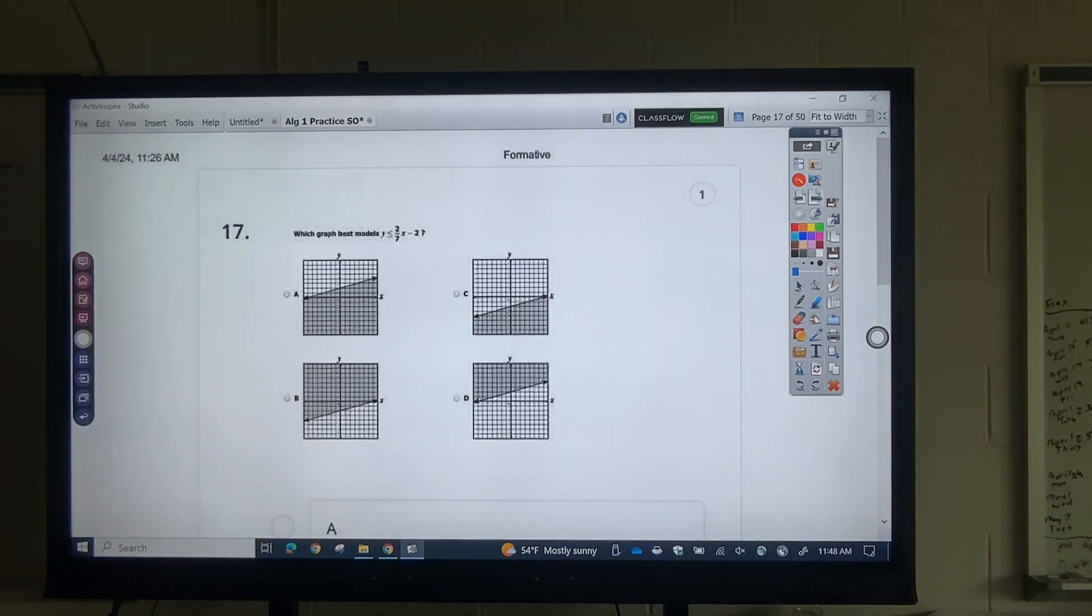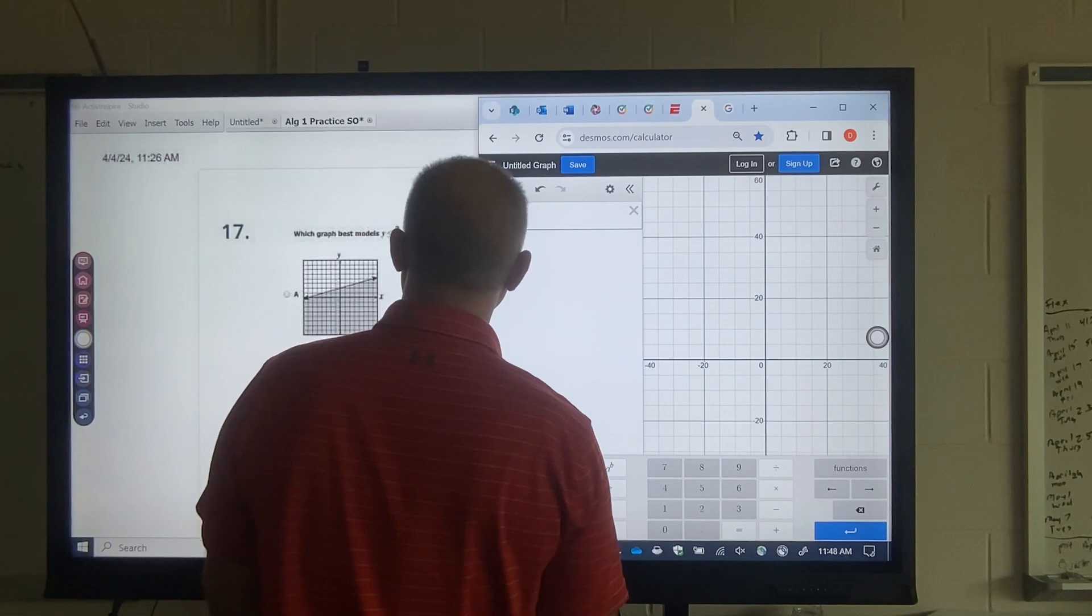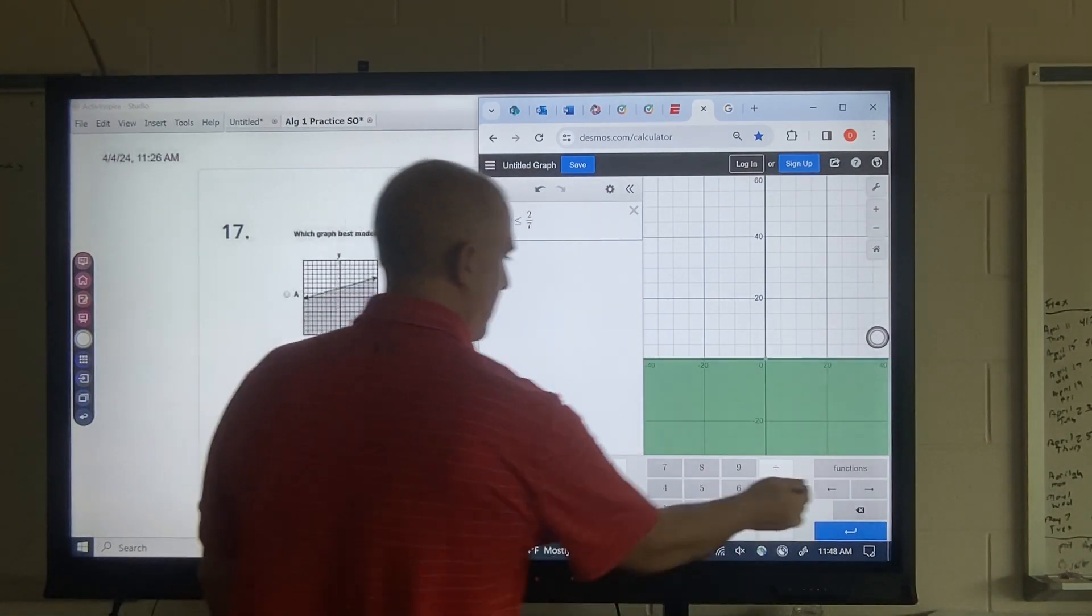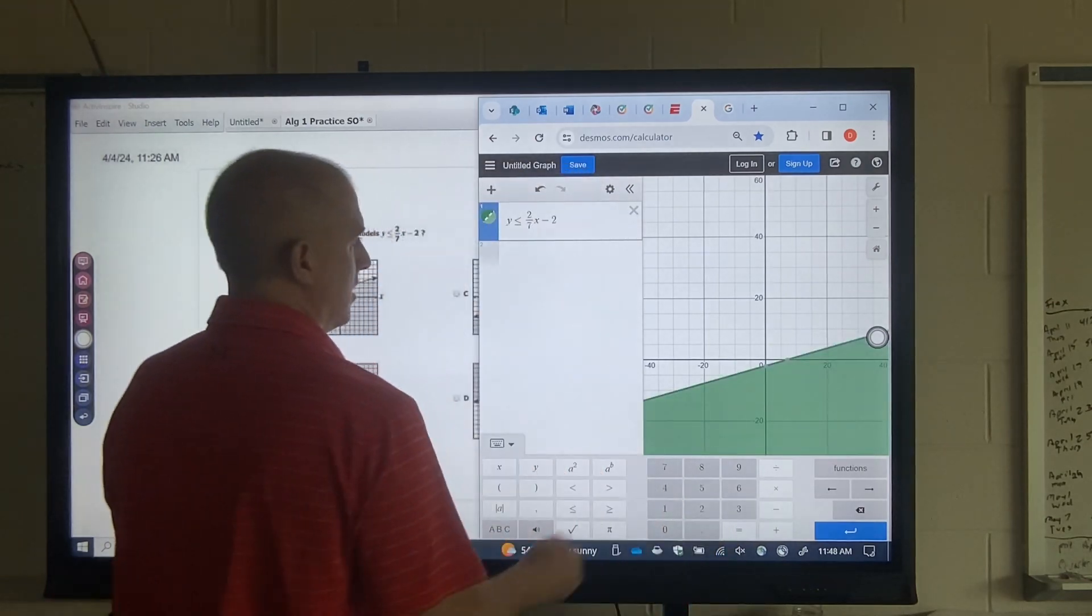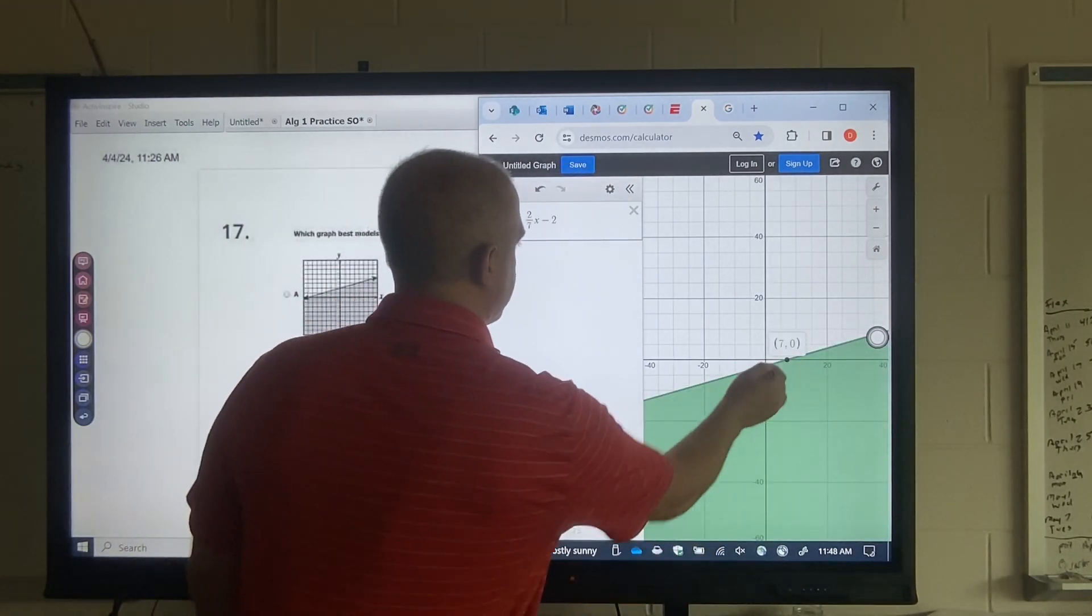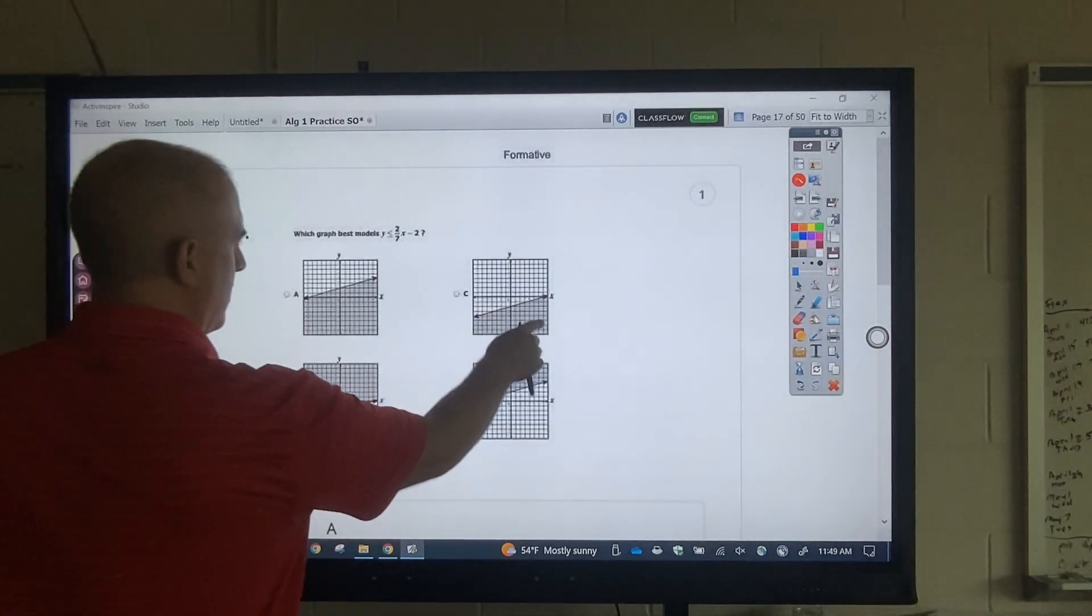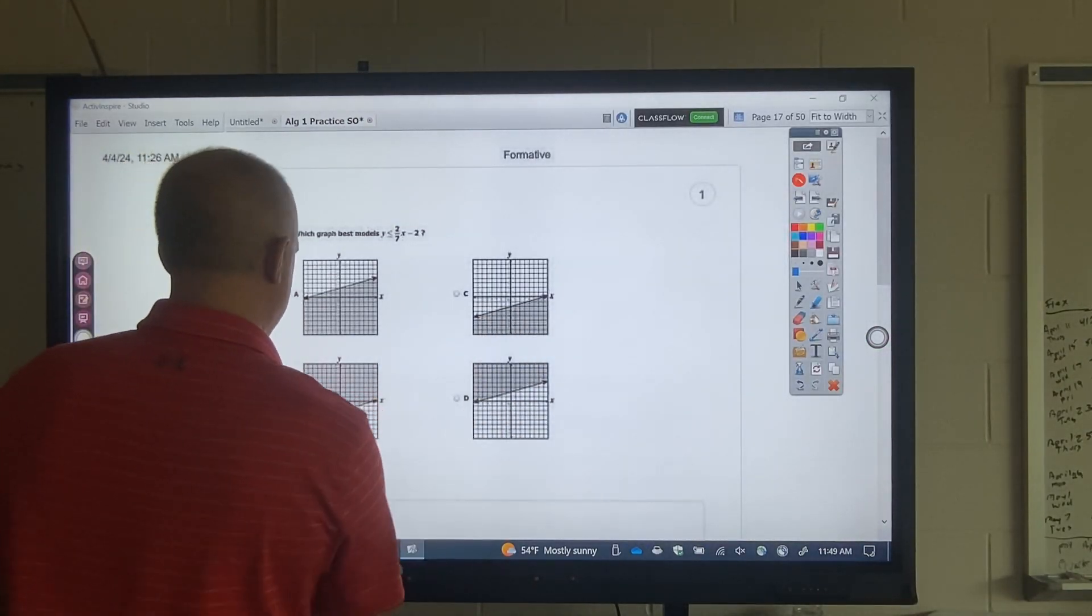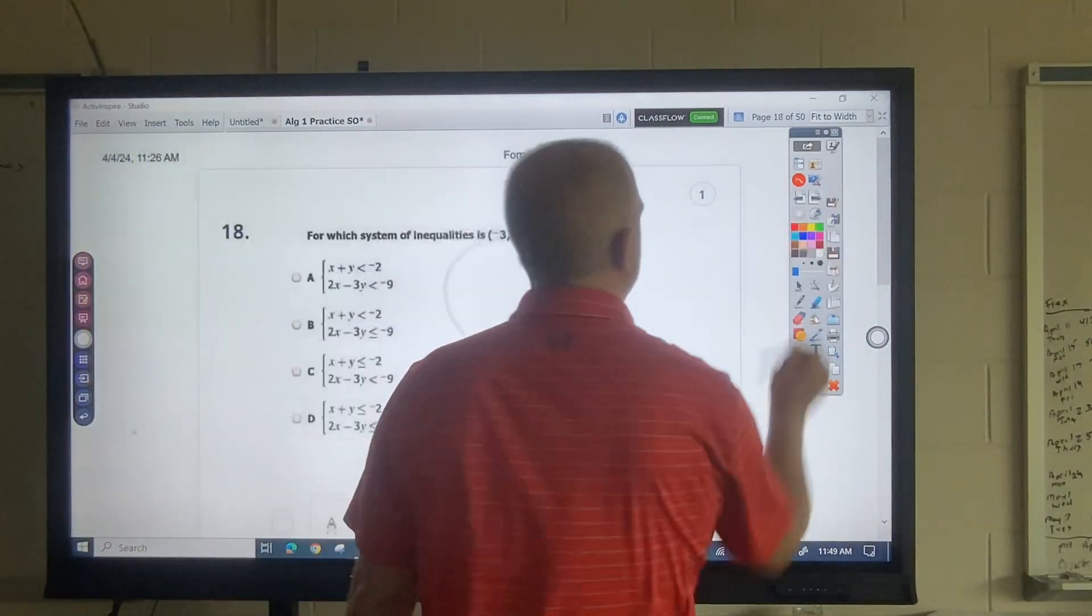This is another graph match question. So I want to go y less than or equal to 2 divided by 7. Click over here. x minus 2. Okay. All right. I need to see where it crosses at 2, 7. It's shaded below there. So that would be this one. Okay. Graph match questions are easy.